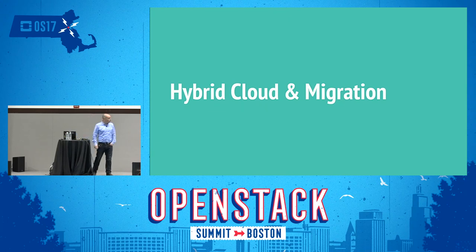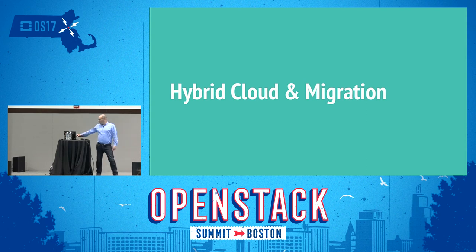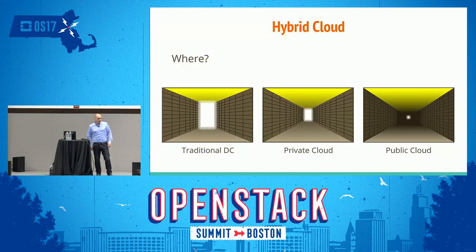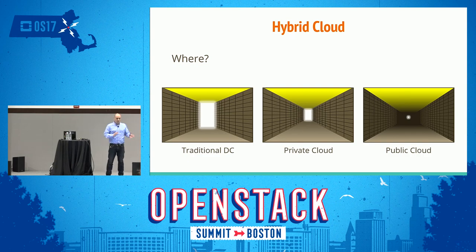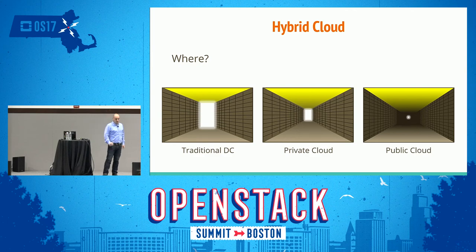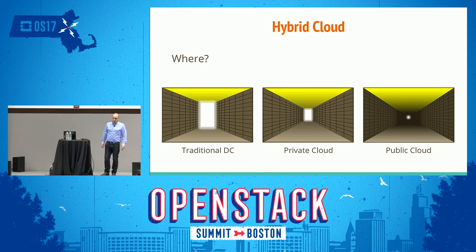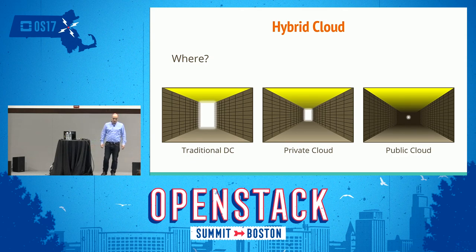I'll talk a bit about hybrid cloud and hybrid cloud migration. Hybrid cloud is basically defined as any kind of combination between the on-prem and some service that you run on public cloud. Even if you're just using Gmail in your business, that's already considered officially as a hybrid cloud. So where do we find hybrid clouds? In traditional data centers, in the private cloud, and in the public cloud.